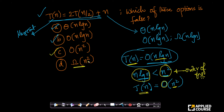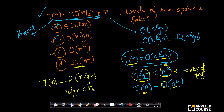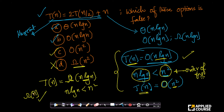The only incorrect option is this one. We know T(n) is Omega of n log n, meaning T(n) grows faster than n log n. But n log n grows slower than n squared, so we cannot conclude that T(n) is Omega of n squared. If the option had been Big Omega of n, that would have been correct, because n grows slower than n log n. So the only incorrect option is option D.